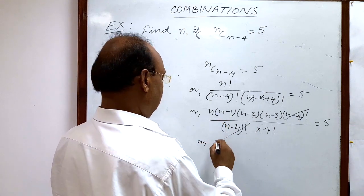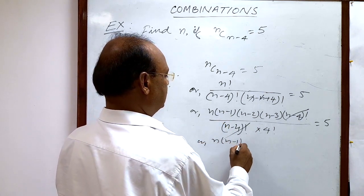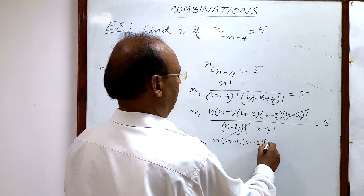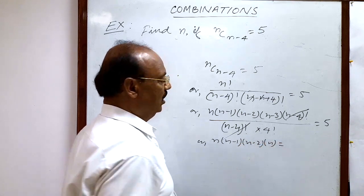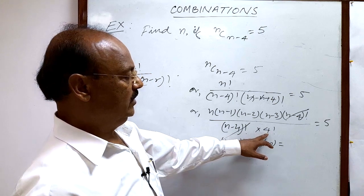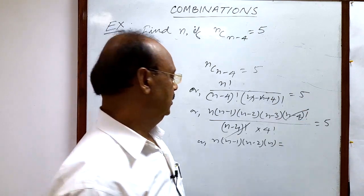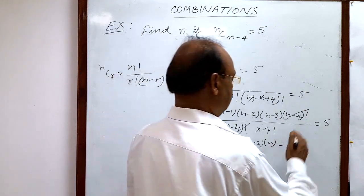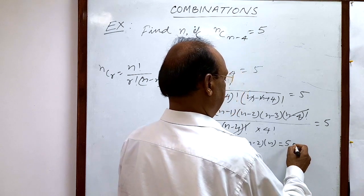In the numerator we are having n(n-1)(n-2)(n-3), and here 4 factorial will transpose to the right-hand side. So we can write this as 5 times